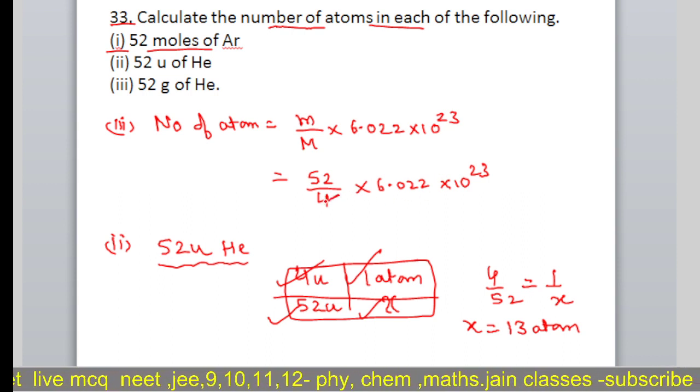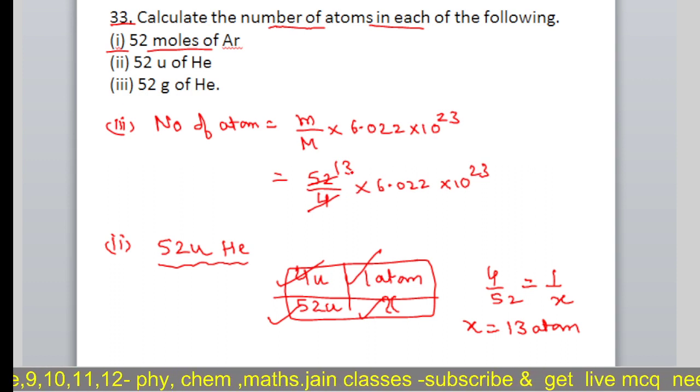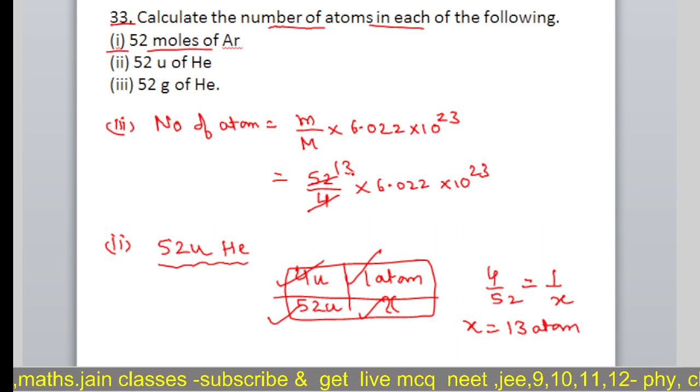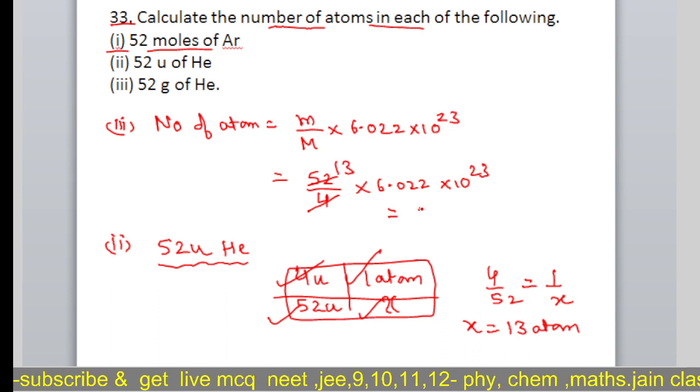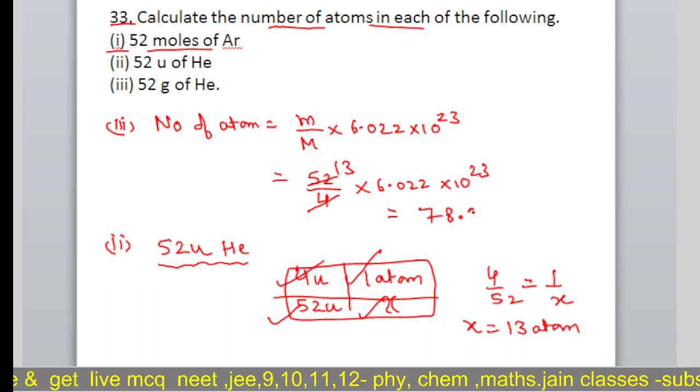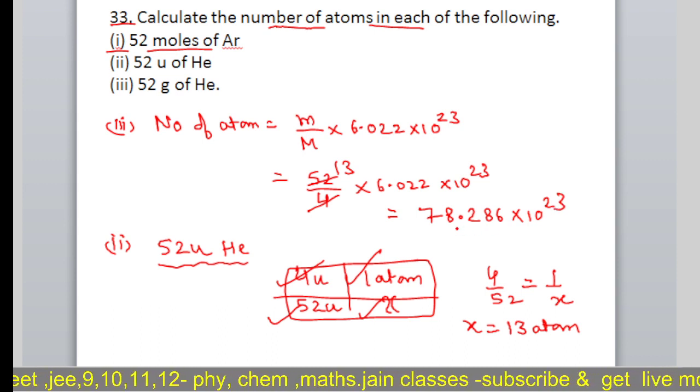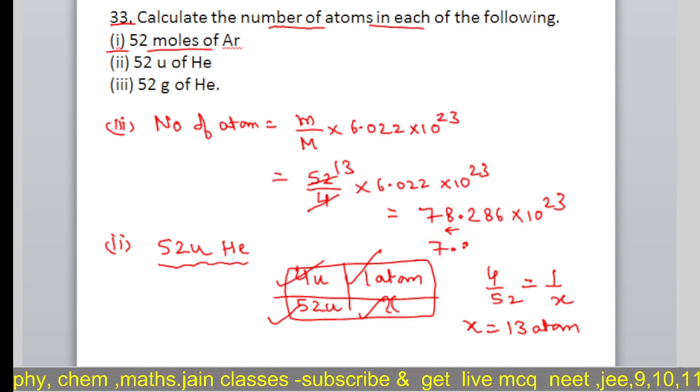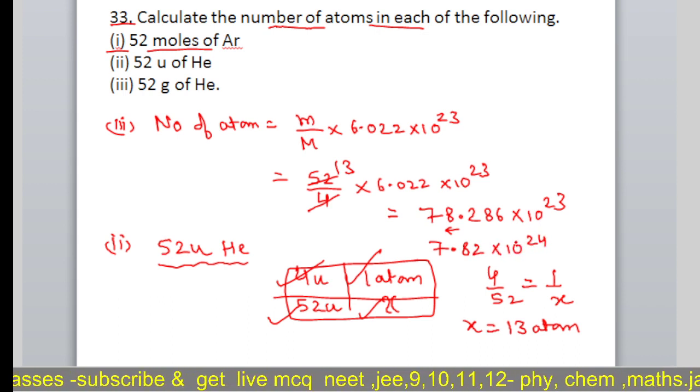To solve this, 52 by 4 must be multiplied by 6.022, which gives 78.286 into 10 to the power 23, or we can write it as 7.8286 into 10 to the power 24.